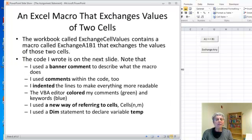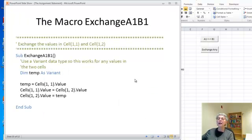Now I have a workbook that I've posted and one of the macros in it simply exchanges the values of the two cells A1 and B1. The code I wrote is on the next slide and I'd like to point out a few things about it. Because we're moving into where we're going to actually be writing code. So first of all, I used a banner comment to describe what my subroutine does. We're always going to put one of those. It's part of our good programming practice.